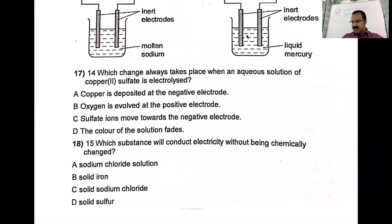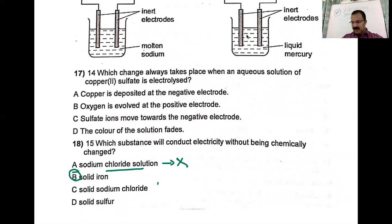Which substance will conduct electricity without being chemically changed? Sodium chloride solution undergoes electrolysis — that is a chemical change. Solid sodium chloride doesn't conduct at all. Solid sulfur has no conduction. Iron conducts without chemical change — the other two don't conduct. So the correct answer is B.